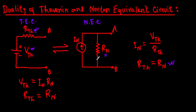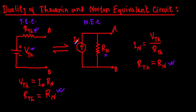If I convert any circuit to a Norton equivalent circuit containing Norton current IN and Norton resistance RN in parallel, I can also convert this Norton equivalent circuit back to a Thevenin equivalent circuit. The Thevenin resistance equals the Norton resistance, and VTH is calculated by multiplying the Norton current with the Norton resistance. This is the duality of Thevenin and Norton equivalent circuits.